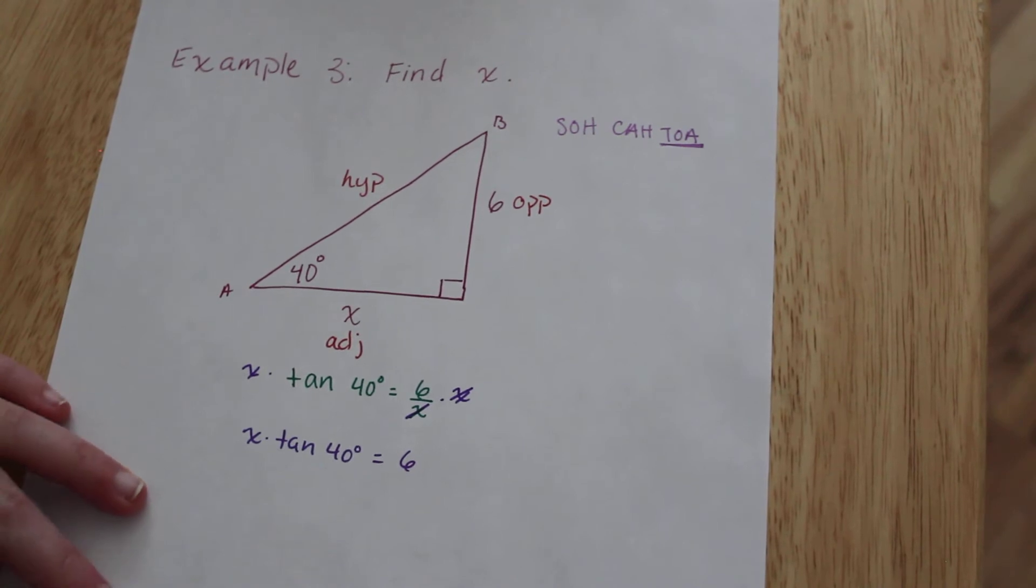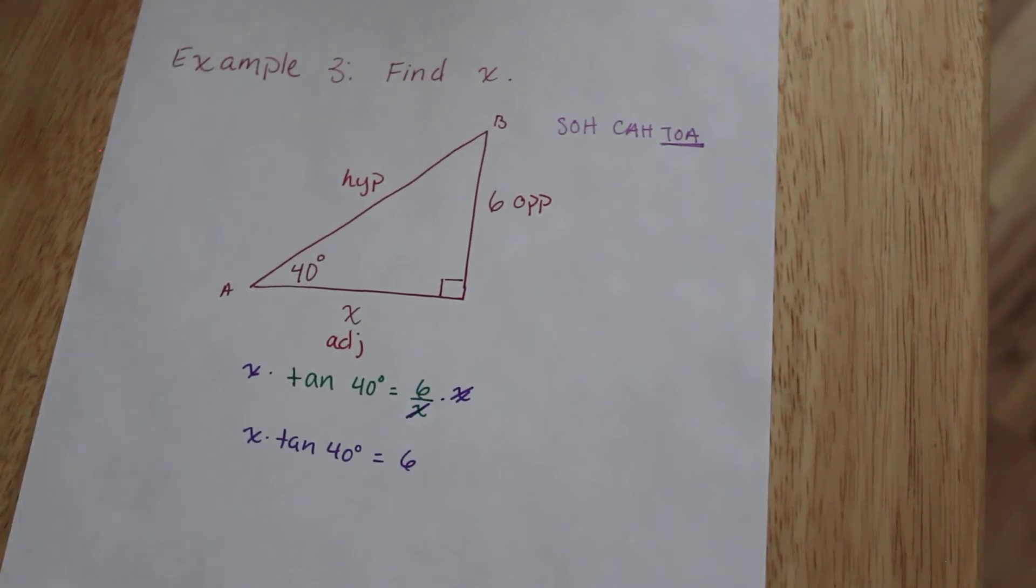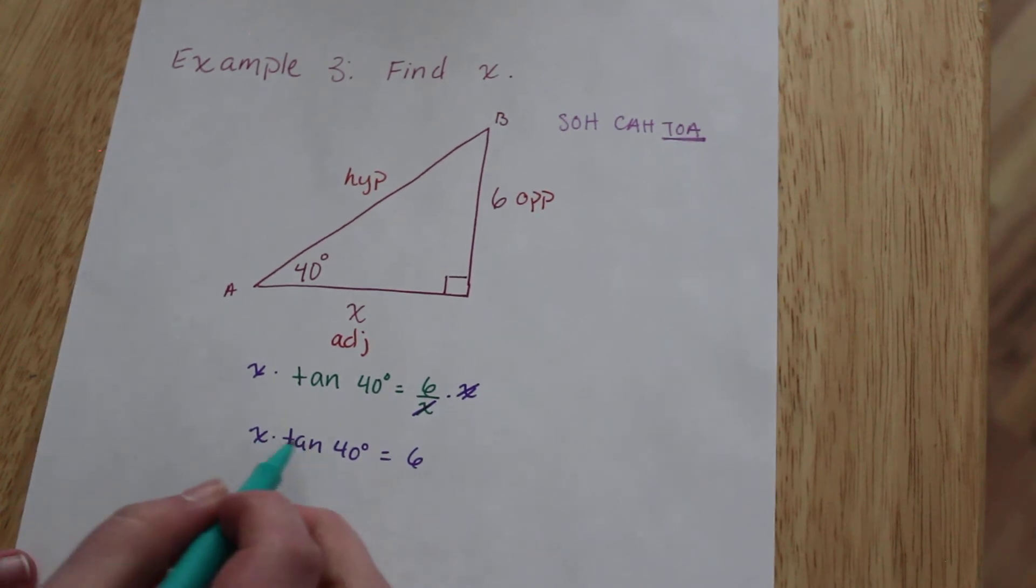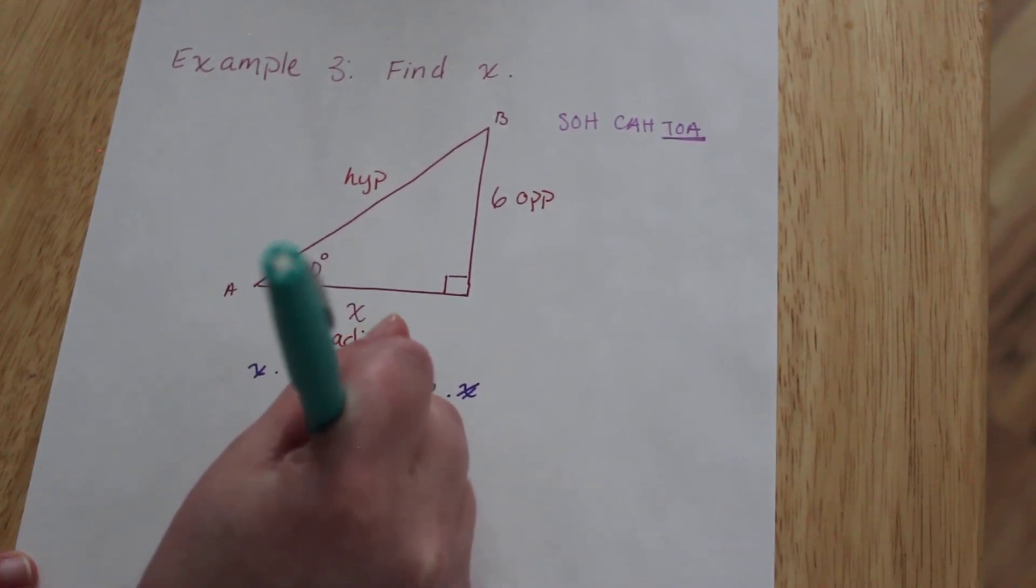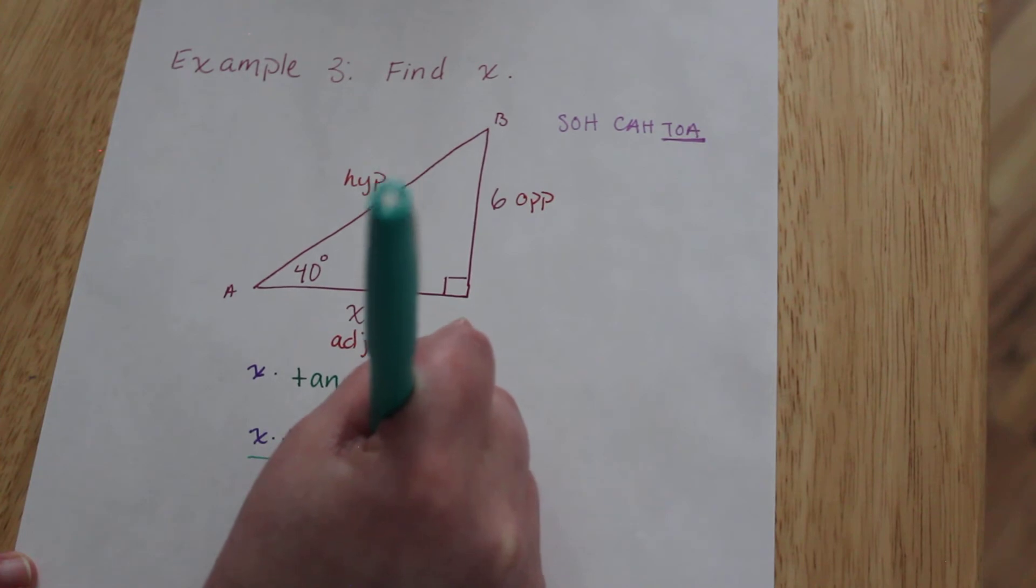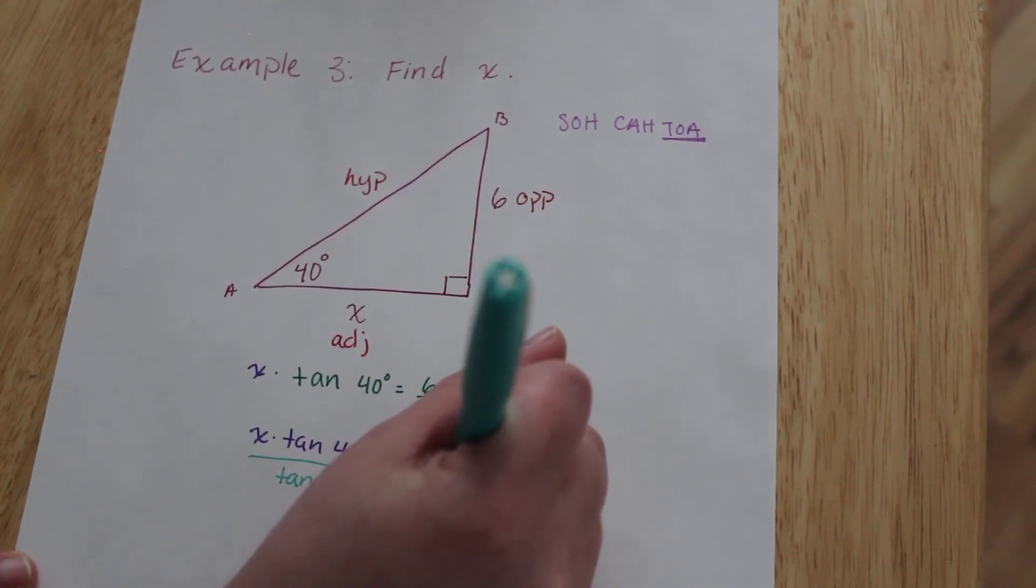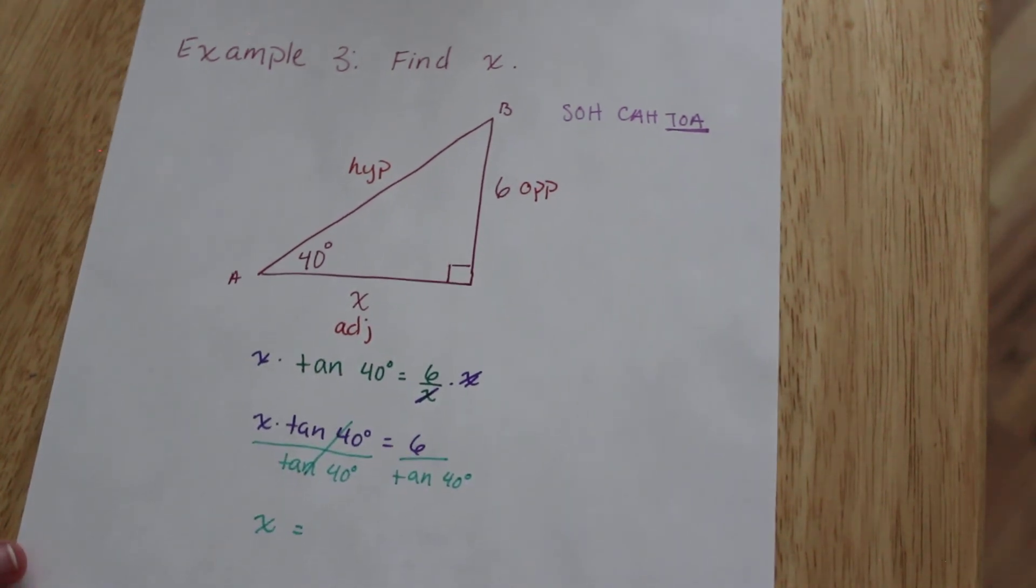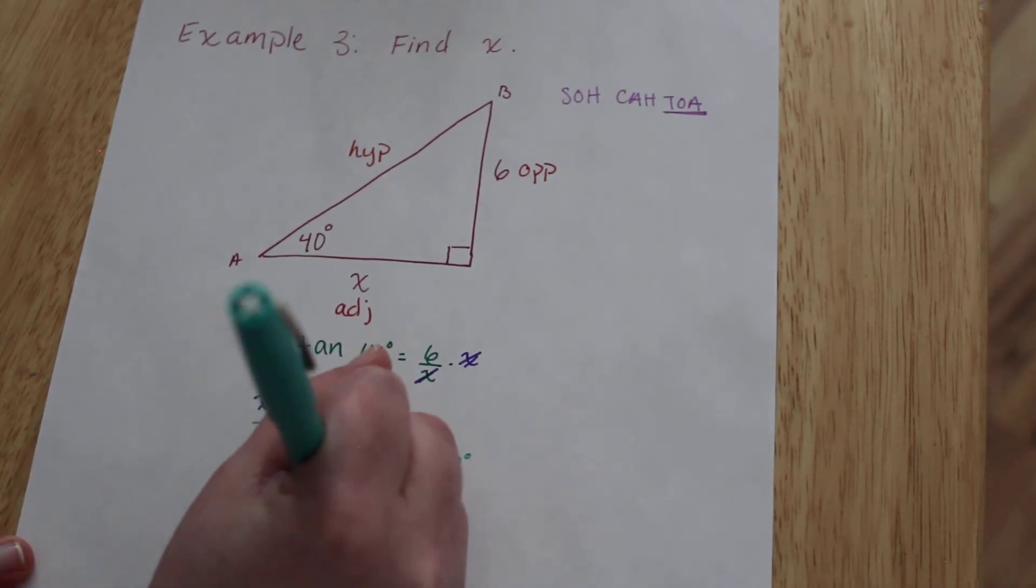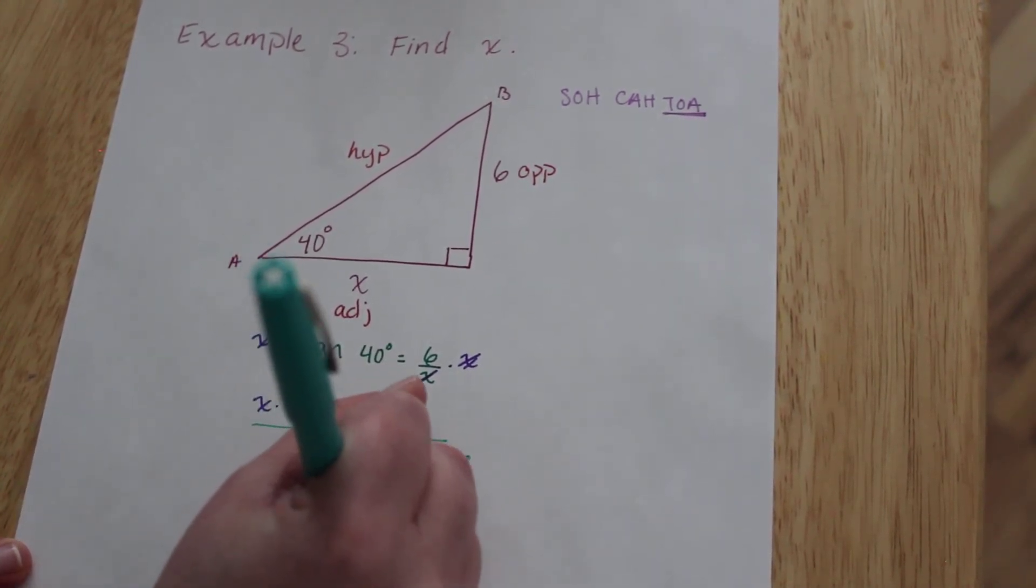So this is what I currently have. x times tangent of 40 degrees equals 6. But that's not what I'm looking for. I'm looking for x. So think about this. How am I going to get x all by itself? Since these two values are being multiplied, let's divide out that tangent of 40 degrees. So now x is all by itself. And on the other side I have 6 divided by the tangent of 40 degrees.